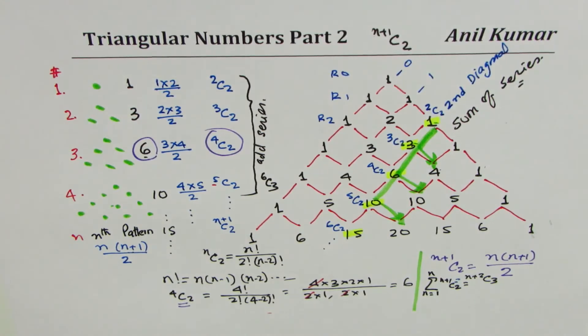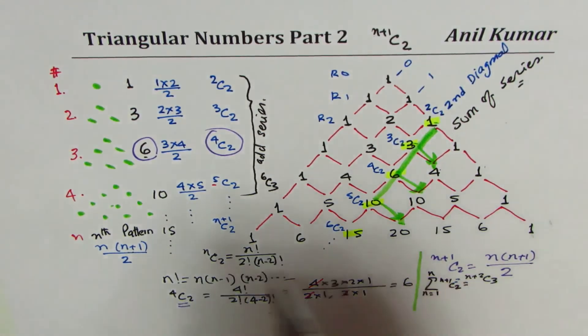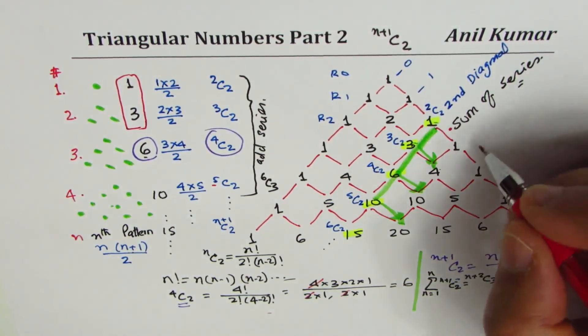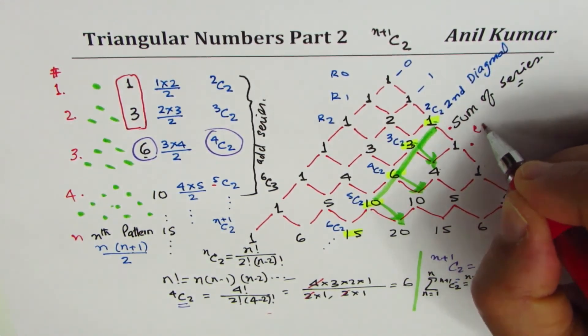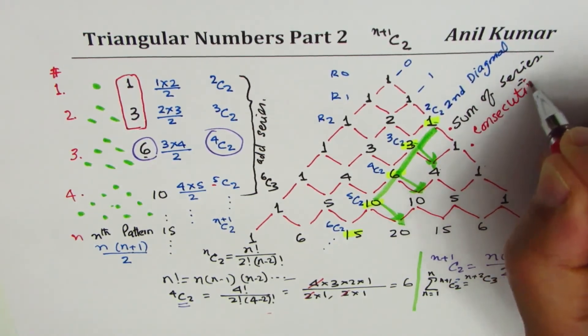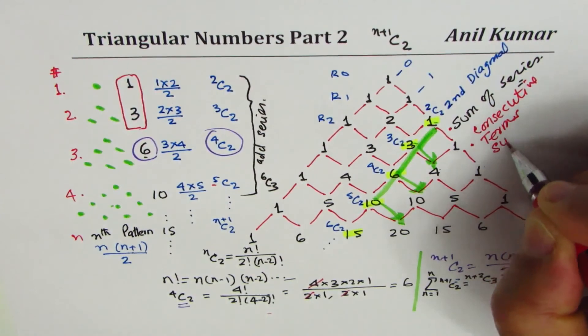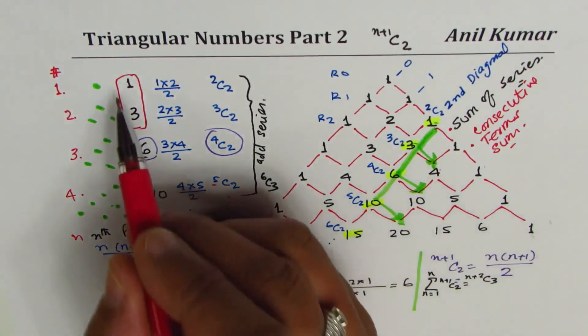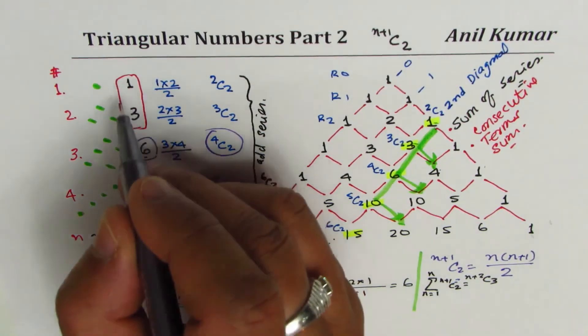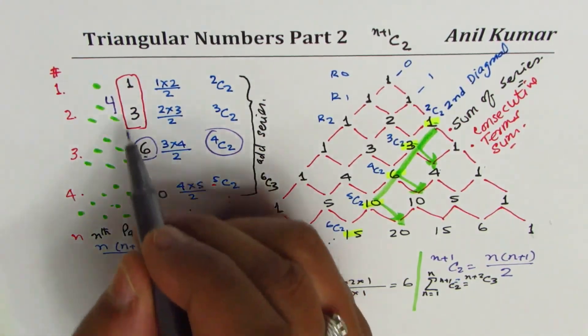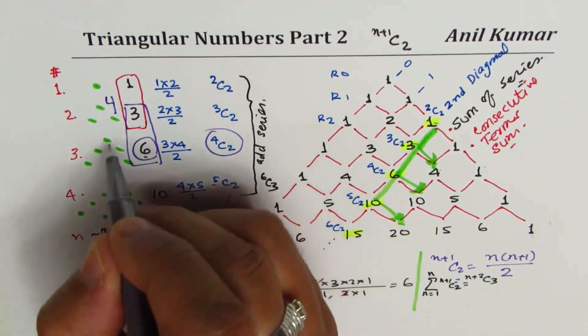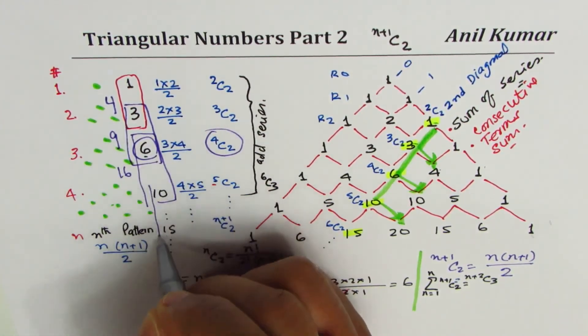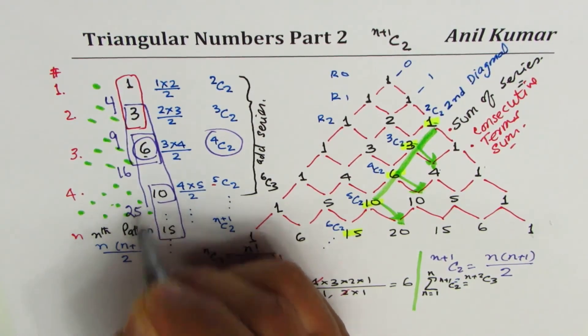One more observation. If you add just two terms, consecutive terms, what do you get? If I add 1 and 3, I get 4. If I add 3 and 6, I get 9. If I add 6 and 10, I get 16. 10 and 15 gives me 25.